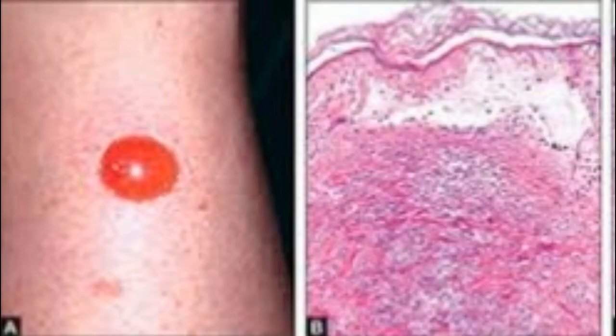The characteristic histologic finding in Bullous Pemphigoid is the presence of a subepidermal blister which contains clear fluid as well as a number of inflammatory cells, including neutrophils, some lymphocytes, and usually a conspicuous number of eosinophils. The separation between the epidermis and the dermis is generally sharp.